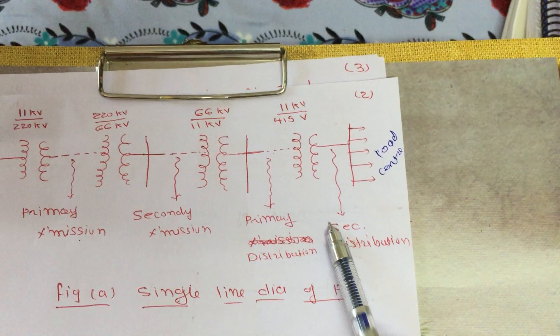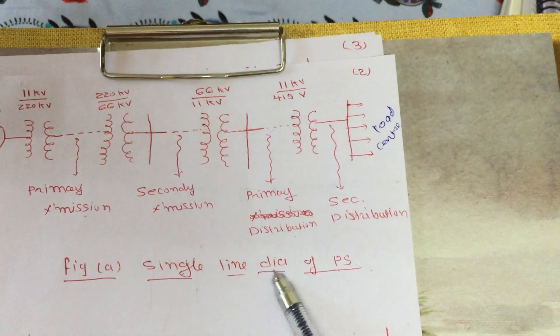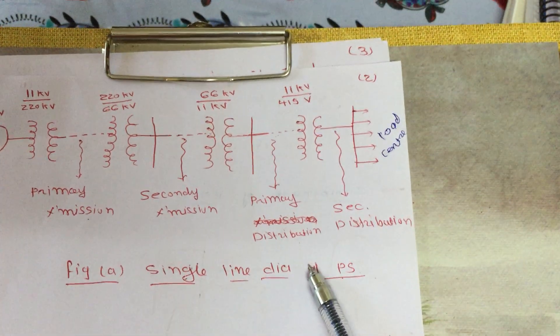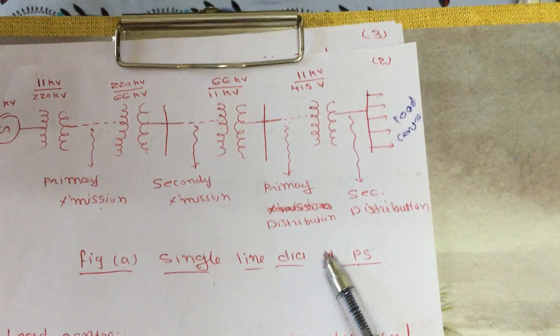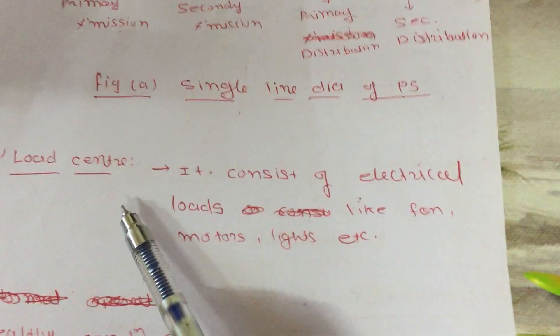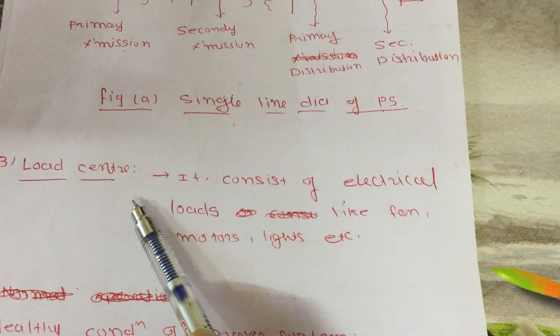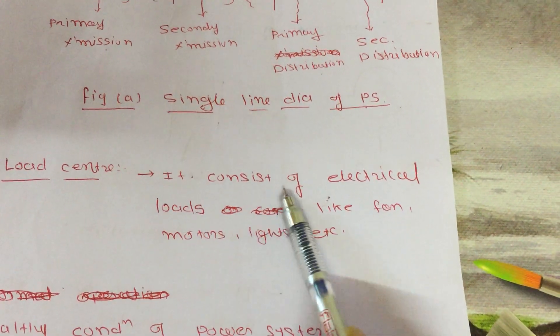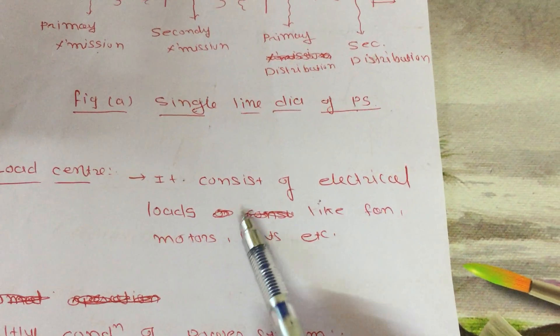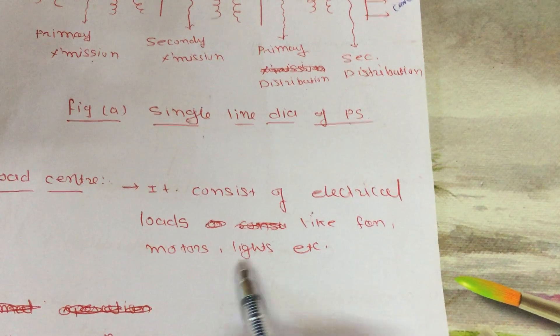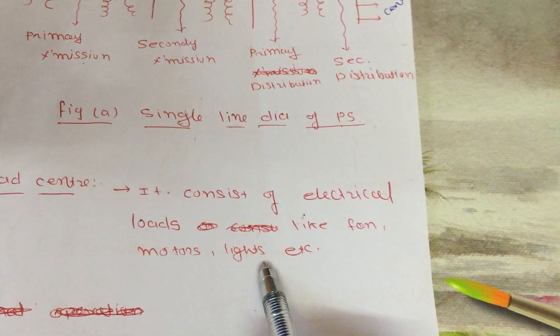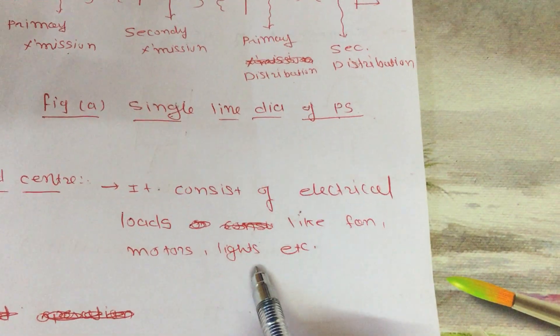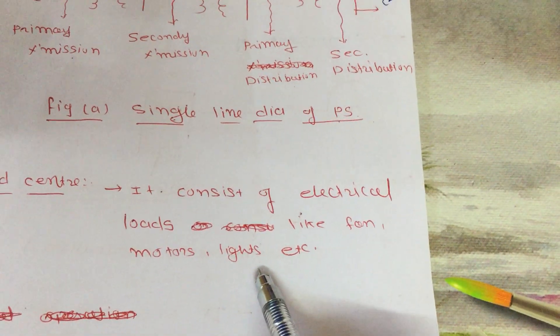This is the single line diagram of the power system, provided for your knowledge. The last component is the load center, which consists of electrical loads like fans, motors, lights, etc.